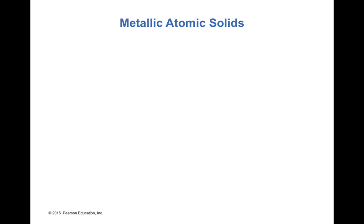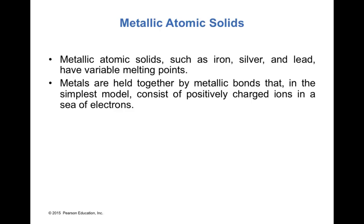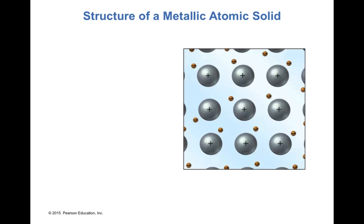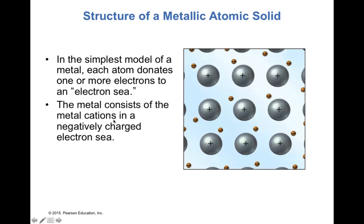Metallic atomic solids, such as iron, silver, and lead, are held together by metallic bonds. In the simplest model, metallic bonds consist of positively charged cations in a sea of electrons. Metallic bond strength varies considerably: mercury has a melting point below room temperature (−39°C), while iron has a very high melting point of 1809°C. In the simplest model, each metal atom donates one or more electrons to an electron sea, forming a lattice of metal cations in a negatively charged electron sea.